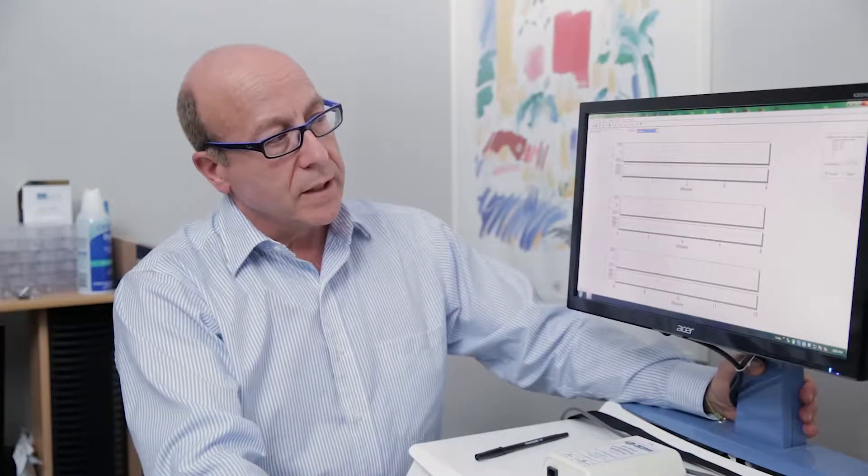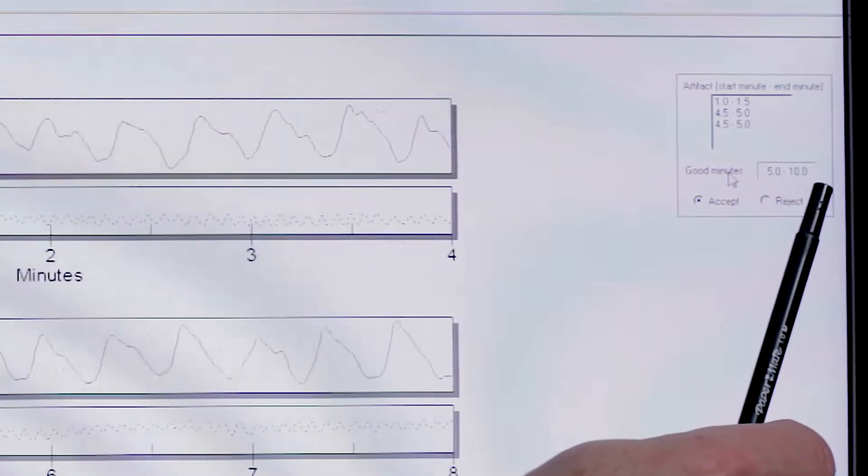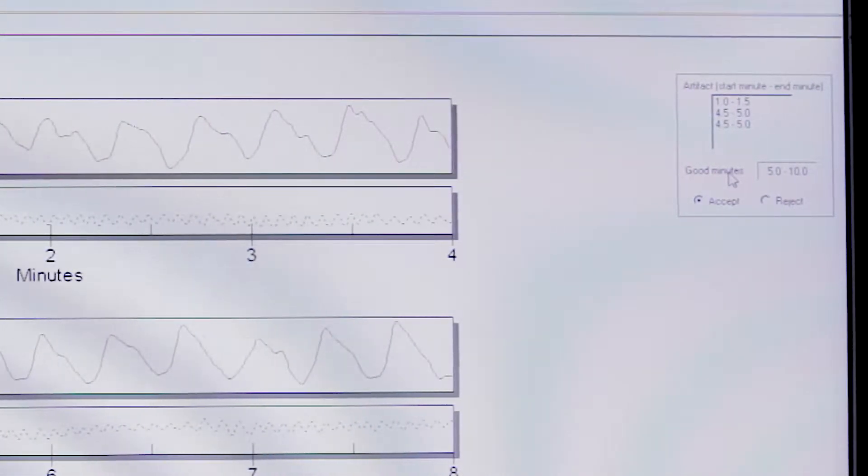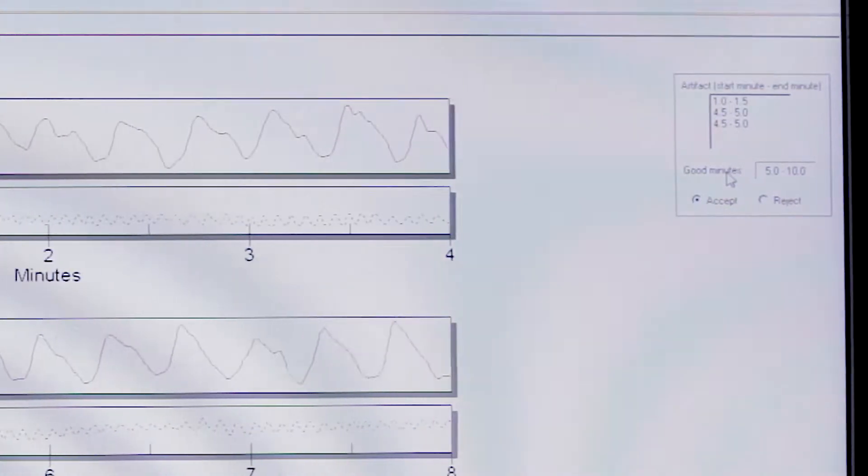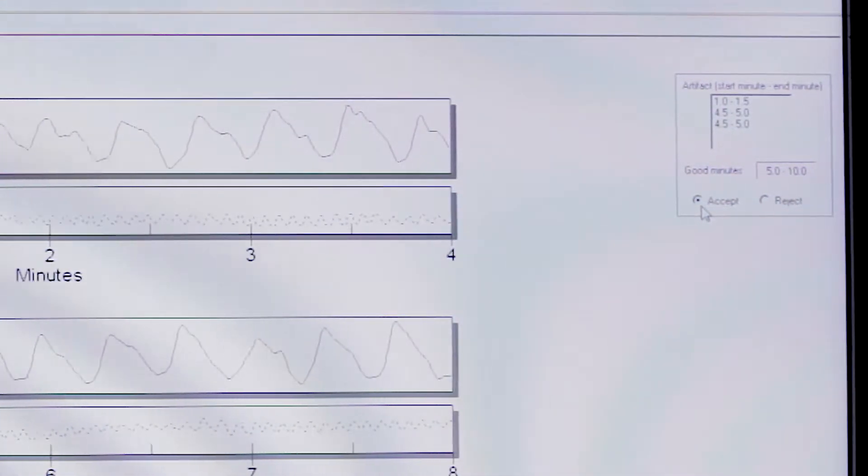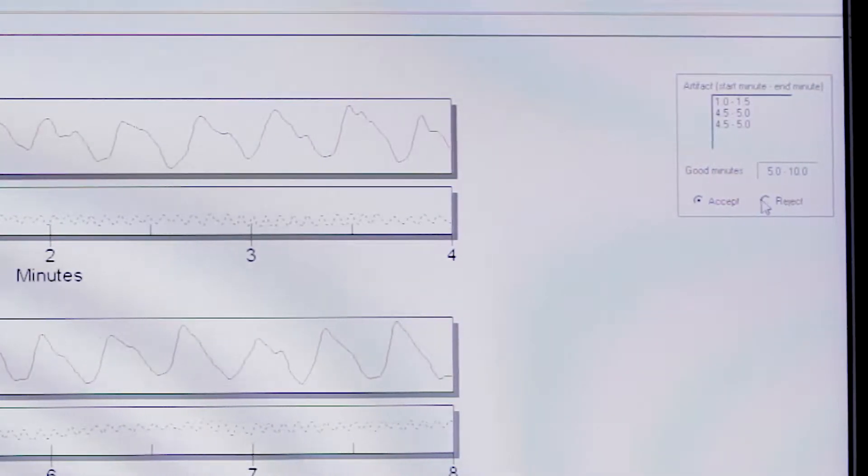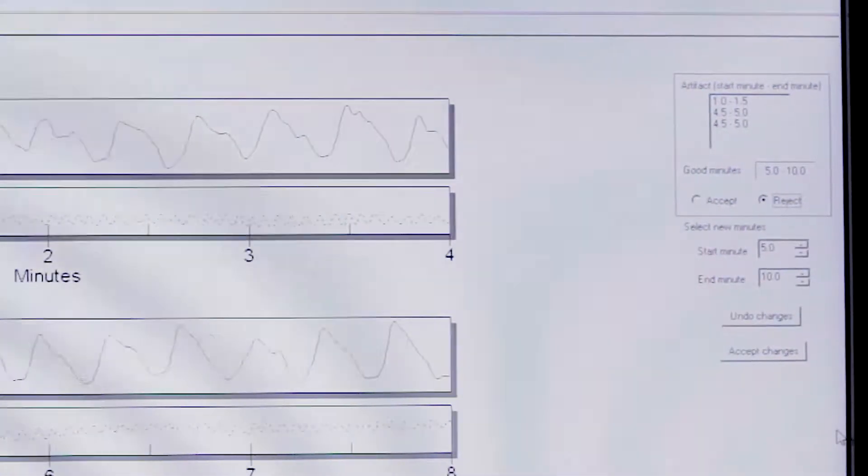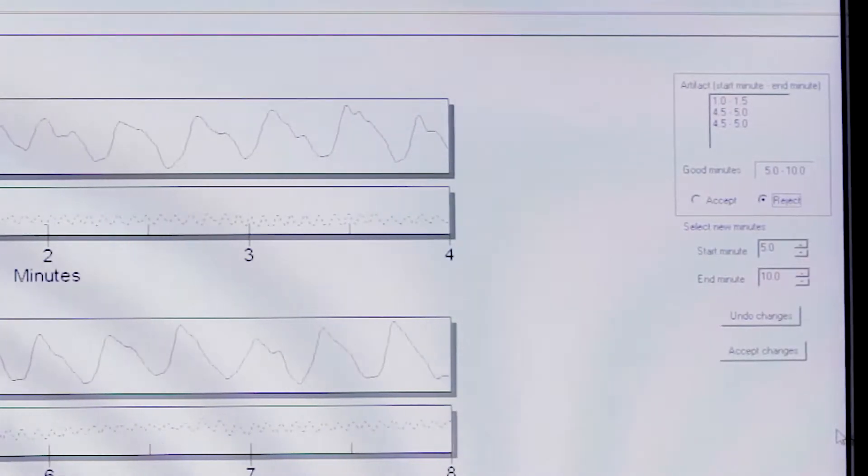The machine has already indicated the good minutes are minutes 5 through 10. If I want to accept those, I can just leave the box already checked as accept, or if I wanted to reject those minutes, I can check the reject box, in which case it will give me the option to self-select any minutes that I like.